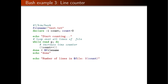Here's another more complex example: a line counter. You don't need to understand all the lines just yet, but this gives you an impression of how we can write a Bash script that counts the number of lines in a file. We provide a filename, declare a variable, then have a loop where we iterate through all the lines of the file and increment the counter, and at the end output how many lines the file has.